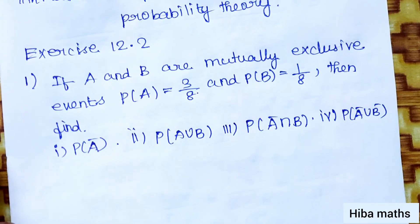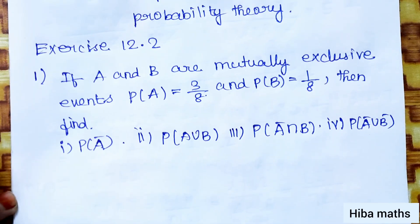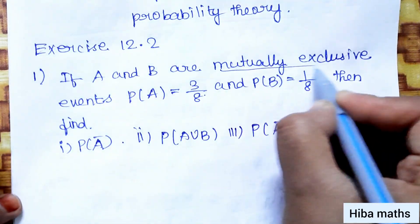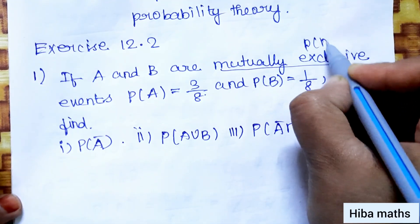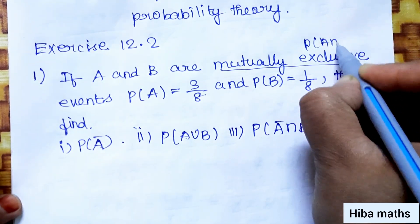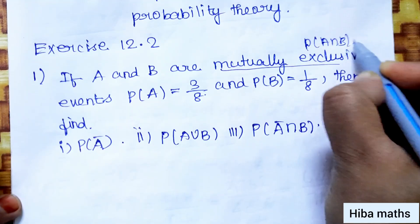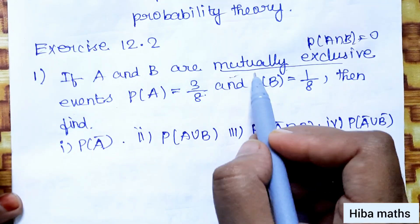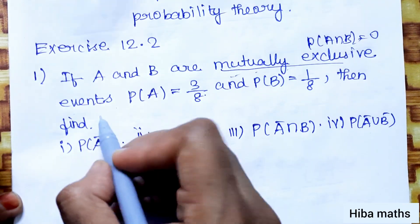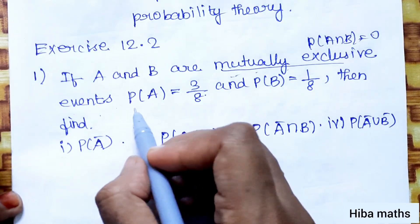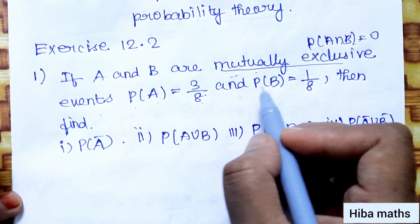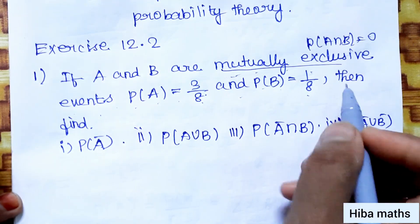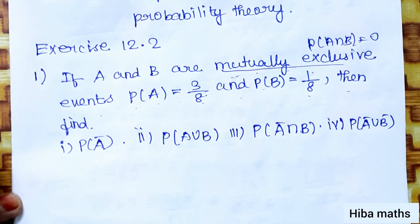If A and B are mutually exclusive events — mutually exclusive means P of A intersection B is 0, that is A intersection B is empty. Given P of A is equal to 3 by 8 and P of B is equal to 1 by 8. Then find 4 questions.